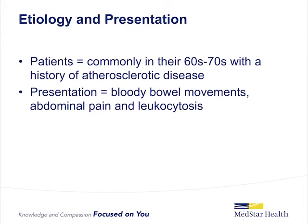Ischemic colitis often presents in older patients with a history of atherosclerotic disease. These patients often present with acute onset of crampy abdominal pain and typically have a bloody bowel movement within 24 hours. Lab results will show leukocytosis. The pathophysiology of ischemic colitis is typically an acute self-limited decrease in blood flow rather than an embolic event or specific vascular lesion.